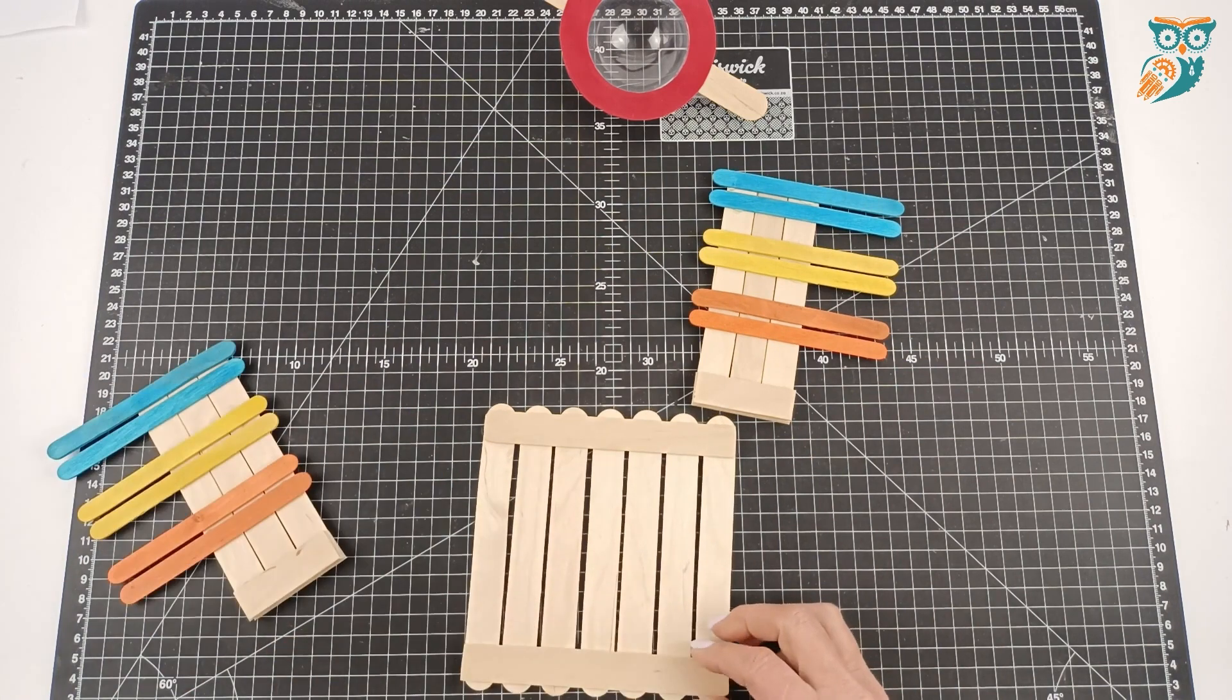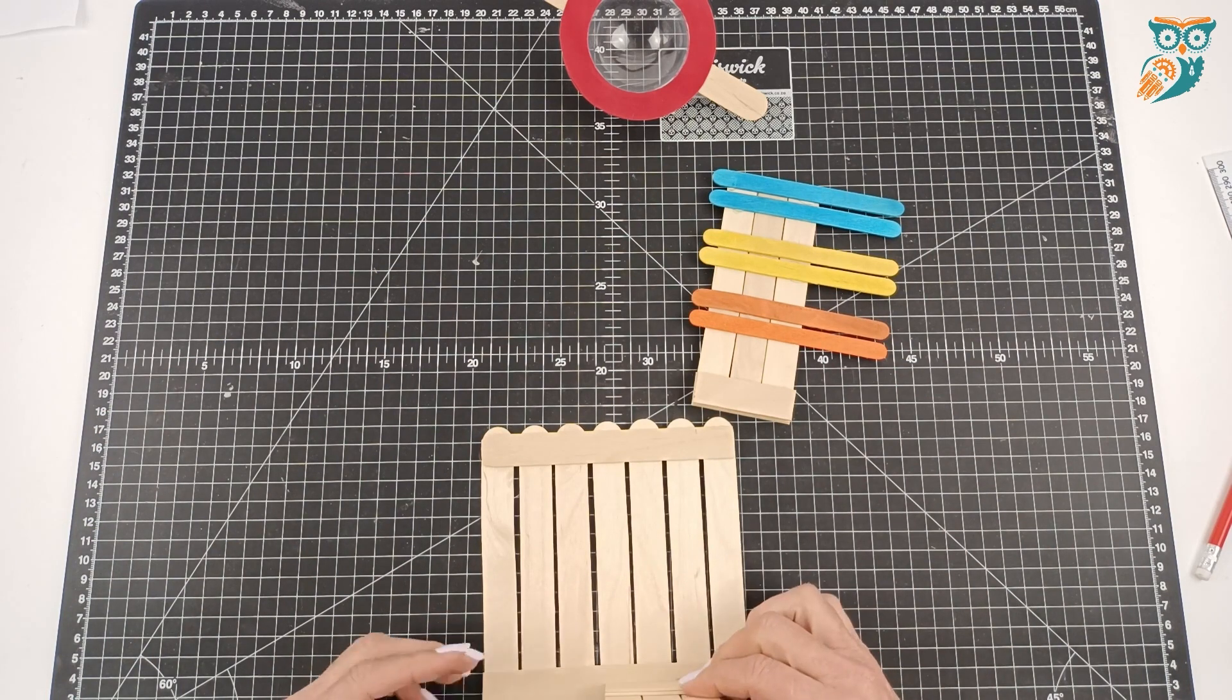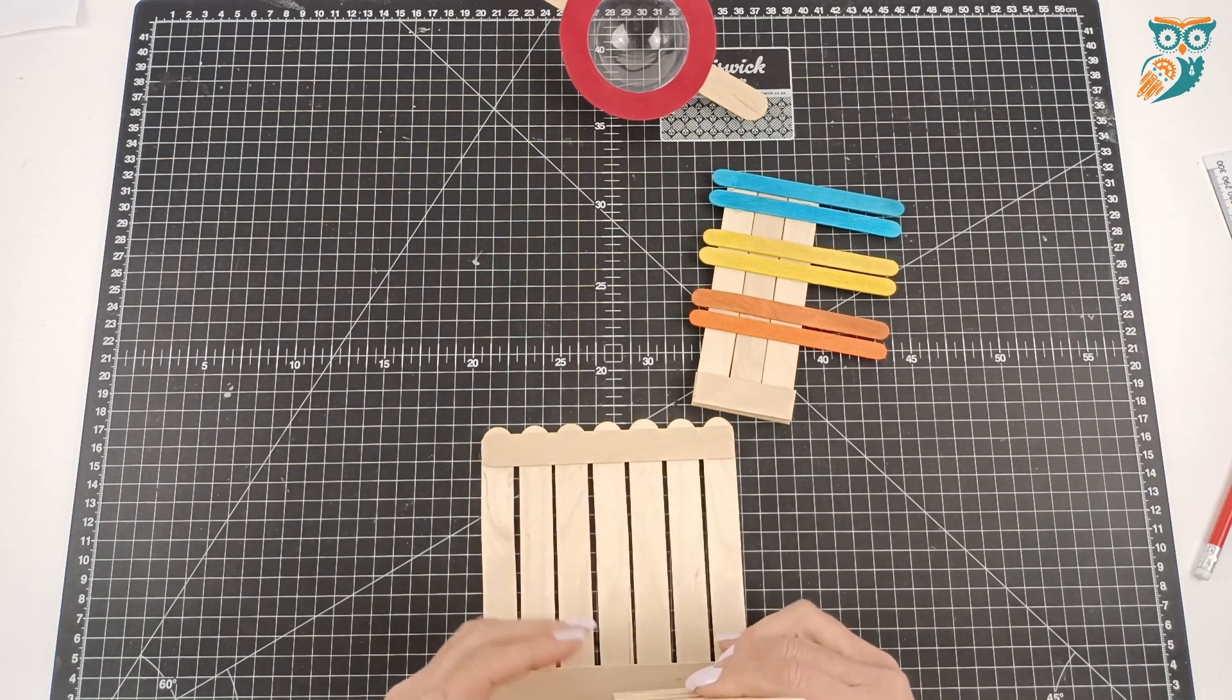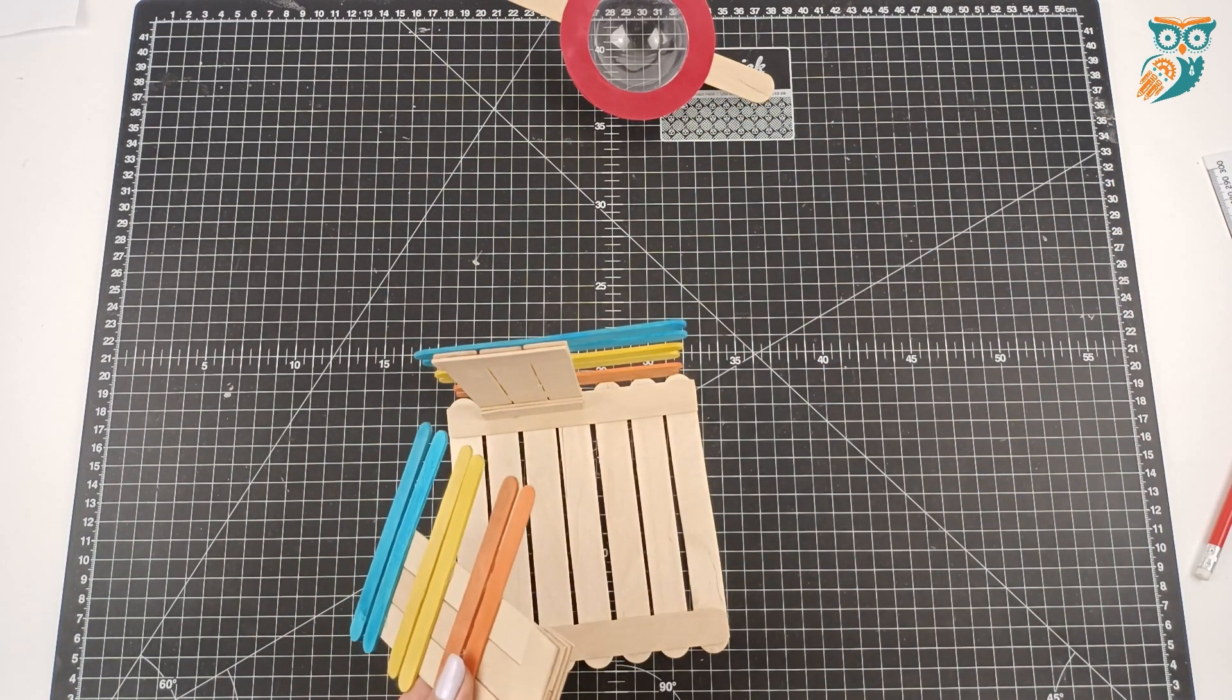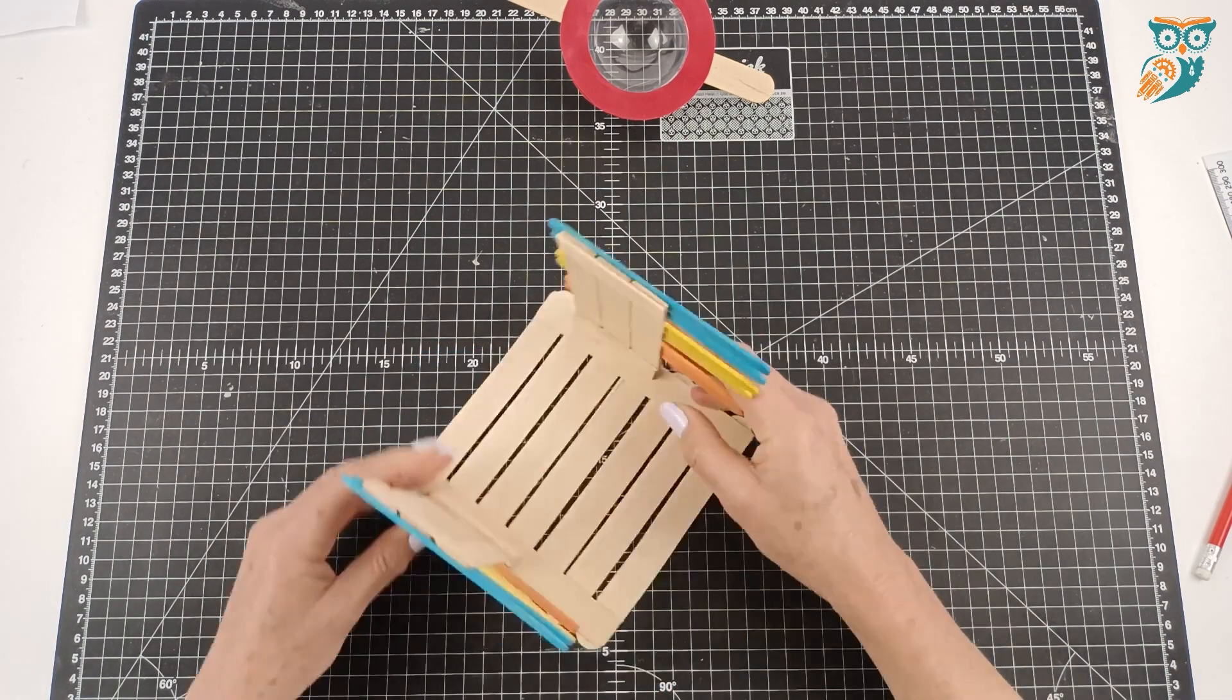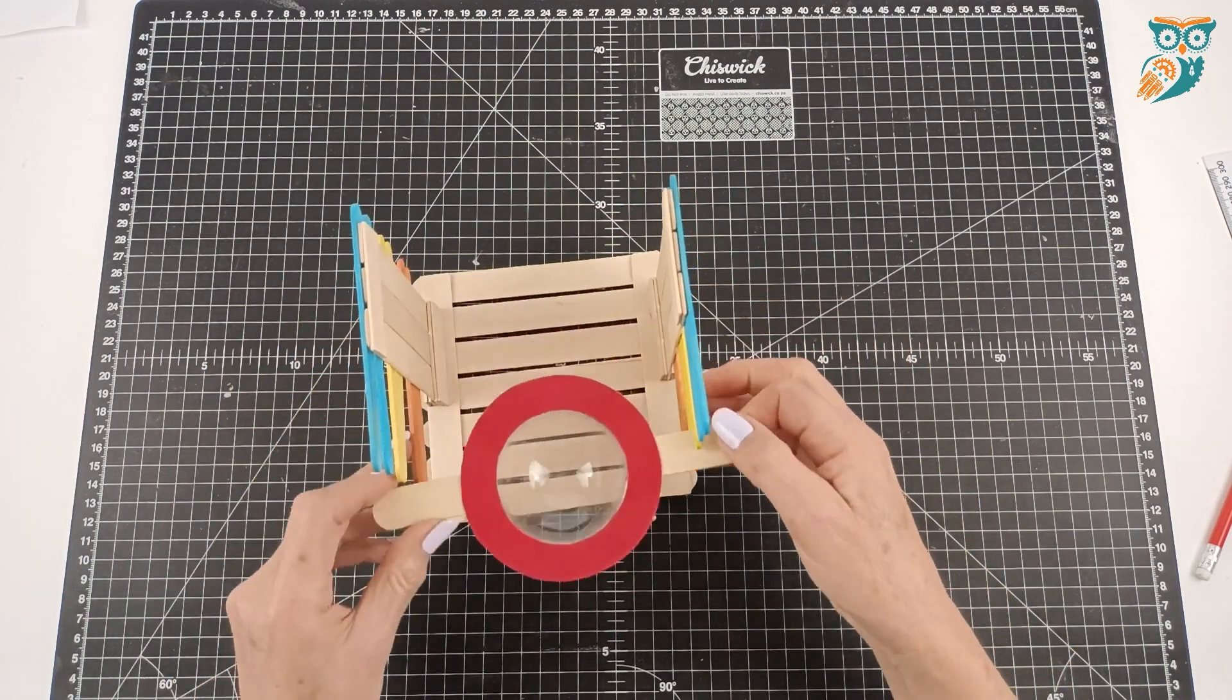Now we're going to attach the sides to the base. We're going to measure two centimeters in on both sides, and then simply glue into place. And there you go. You can just slide the magnifying glass anywhere along there.